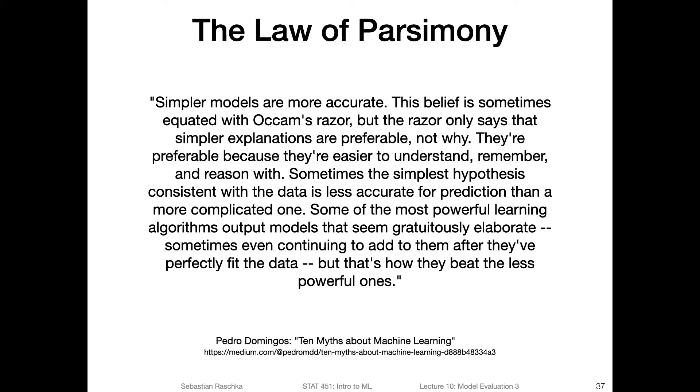I found a quote in an article by Pedro Domingos called 'Ten Myths about Machine Learning'. In this article, Pedro Domingos writes that simpler models are more accurate. This belief is sometimes equated with Occam's razor, but the razor only says that simpler explanations are preferable, not why. He was explaining there's a misconception that some people think simpler models could be more accurate. This is not necessarily true. It's unrelated to Occam's razor. What Occam's razor says is if two models perform equally well, the simpler one is preferable.